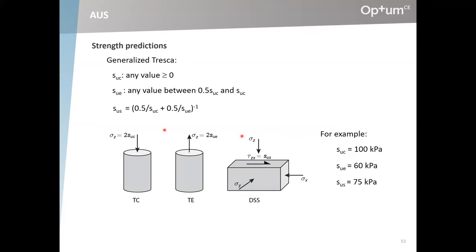Let's look at some more predictions from the model. This is a two-parameter model where we input the strengths determined in triaxial compression and triaxial extension. A quite common experiment is a direct simple shear (DSS) test, where you shear the material and infer the undrained shear strength — I call it SUS, the simple shear undrained shear strength. You can show quite easily that, assuming validity of the generalized TRESCA criterion, SUS is a function of the other two parameters — basically the harmonic mean of the extension and compression strengths. So the simple shear strength is somewhere in between the extension and compression strengths.